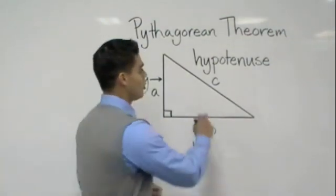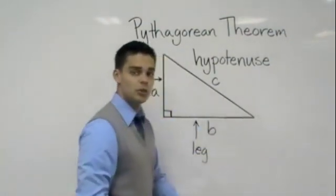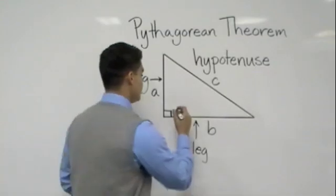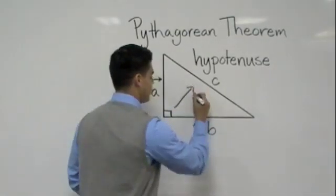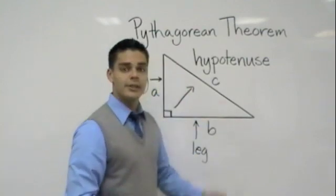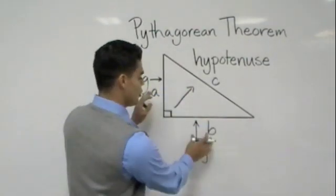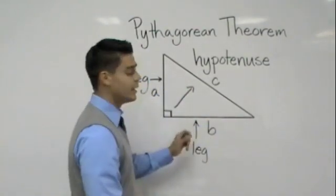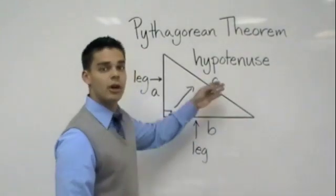and we're always going to have something called the hypotenuse. The hypotenuse is always going to be directly across from our 90 degree angle, and that's always going to be our longest side. So we have our two shorter sides, which are A and B, and then we're going to have our C, which is our hypotenuse.